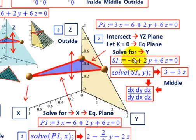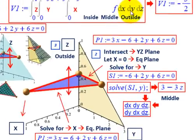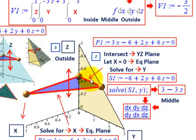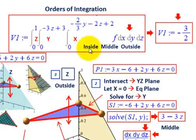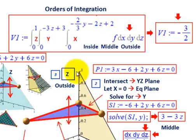So that was our middle integral DY. Y is moving from 0 out to 3 minus 3Z, represented by that line here. So the middle integral DY goes from 0 to that solved value. And of course, the outside integral is just moving from 0 to 1 for Z — no calculations, just going up from 0 to 1.